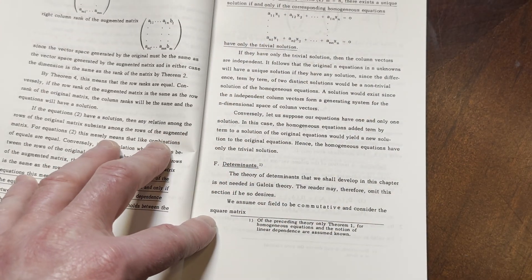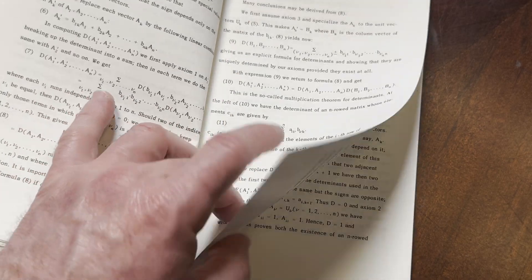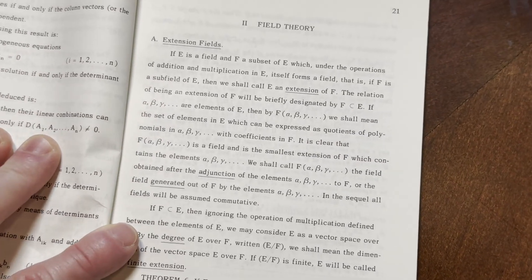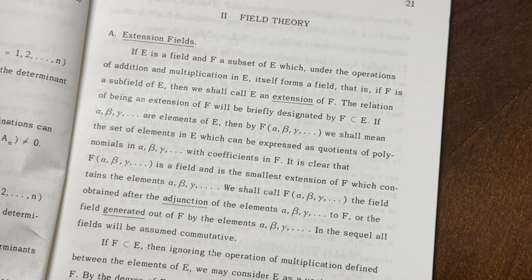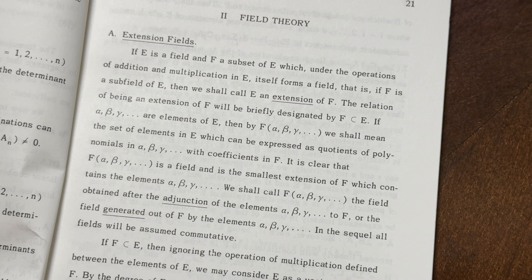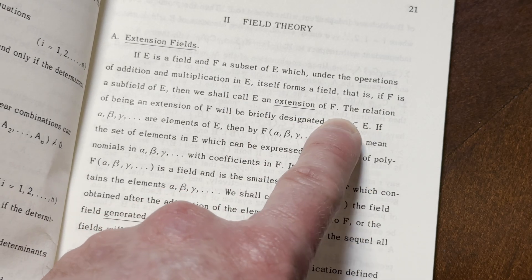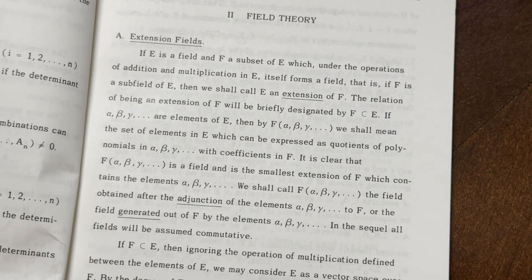And then here's field theory, which is also very, very intense. Extension fields: if E is a field and F is a subset of E which, under the operations of addition and multiplication in E, itself forms a field — that is, if F is a subfield of E — then we shall call E an extension of F. Notice they use the variable E for extension, which makes it a little easier. So E is an extension of F, a bigger field that contains the subfield F.